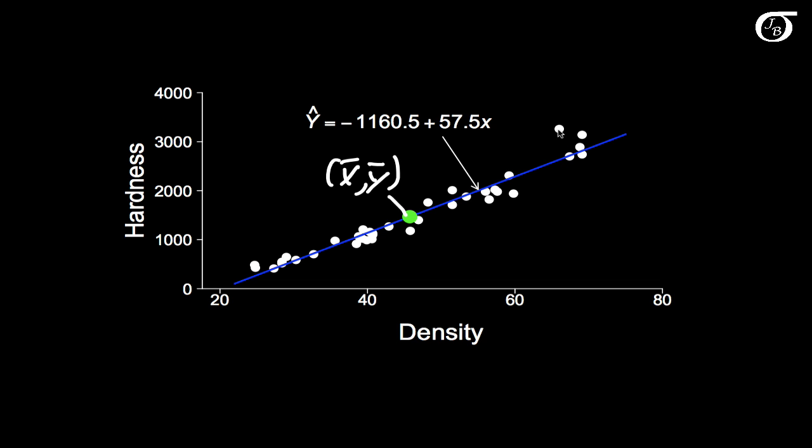And if we took all of the residuals, these vertical distances, positive values if the point's above, and negative values if they're below, if we added up all of those residual values, that would add to 0, as it always does in least squares regression.